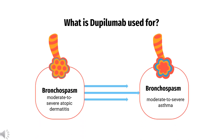What is Dupilumab used to treat? In the U.S., Dupilumab is indicated for the treatment of patients aged 6 months and older with moderate to severe atopic dermatitis whose disease is not adequately controlled with topical prescription therapies, or when those therapies are not advisable. In Europe and Canada, the drug for this indication is approved for patients aged 6 years and older. Dupilumab is also indicated as an add-on maintenance treatment for patients aged 6 years and older with moderate to severe asthma characterized by an eosinophilic phenotype or with oral corticosteroid-dependent asthma. However, the drug is not indicated for relief of acute bronchospasm or status asthmaticus.